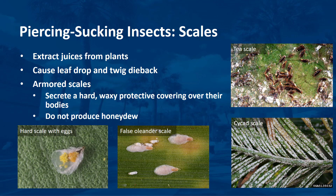Scales are serious pests on many ornamental plants. Most ornamentals are susceptible to one or more kinds of scales. They extract juices from the plants, causing an unhealthy appearance. Scales cause leaf drop and twig dieback, resulting in little new growth. Scales are divided into several groups, including armored scales, soft scales, and mealybugs. Armored scales secrete a hard, waxy, protective covering over their bodies. They do not produce honeydew. These scales may be circular, oval, oblong, thread-like, or pear-shaped.